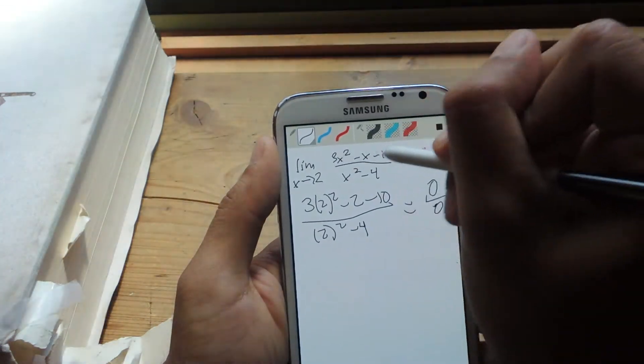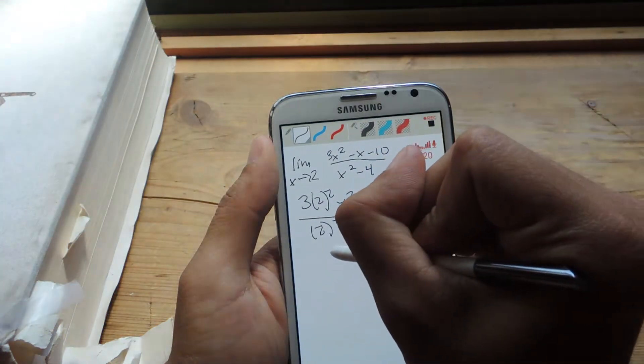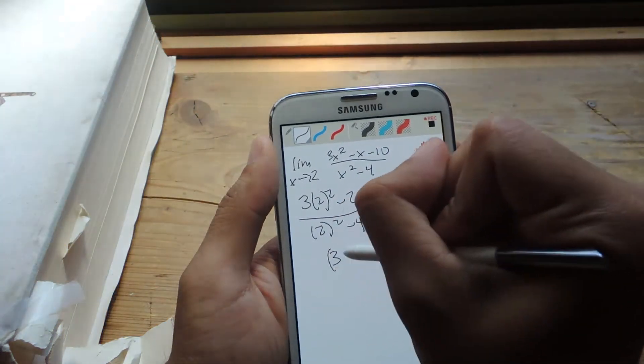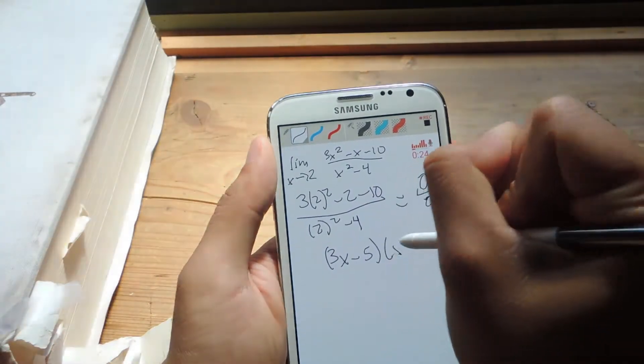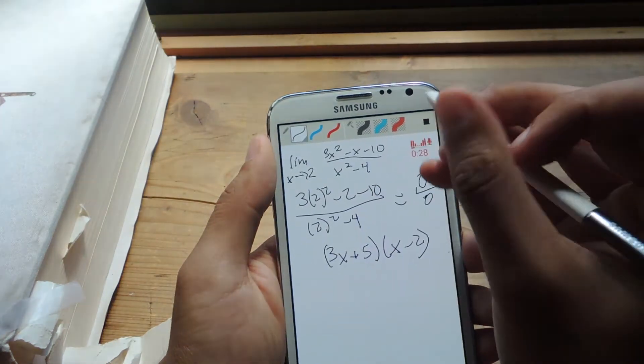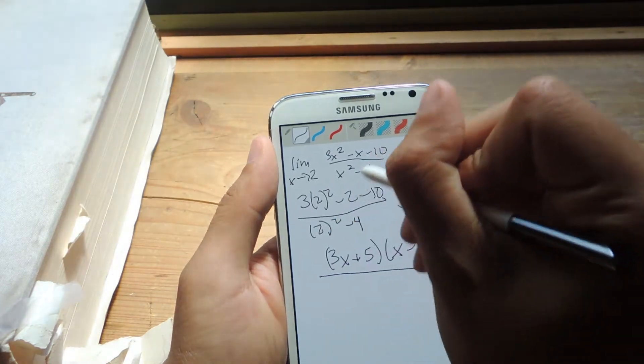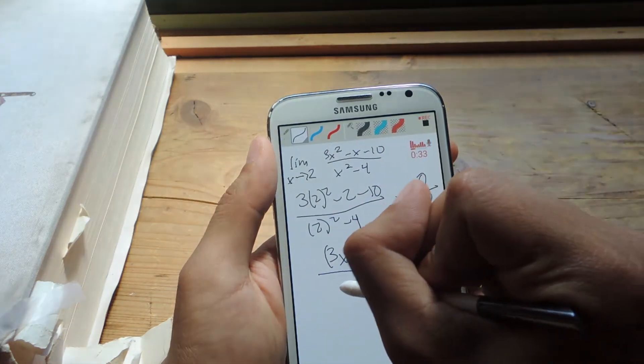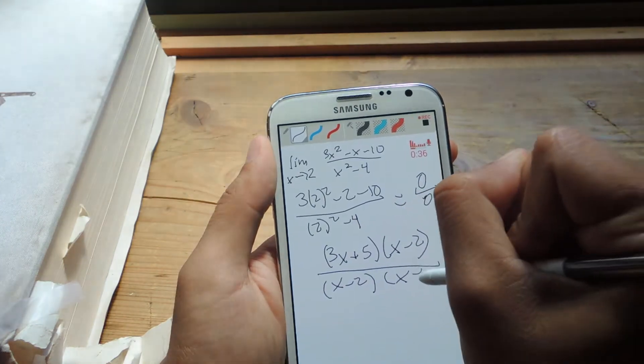So the next step is you'll need to factor out from this. So the top one will become 3x minus 5, and x minus 2. Actually, it's 3x plus 5. And then the next thing we're going to do is factor out the bottom. So it would be x minus 2, x plus 2.